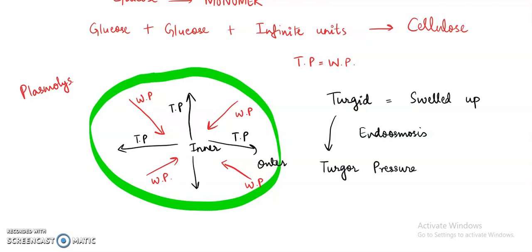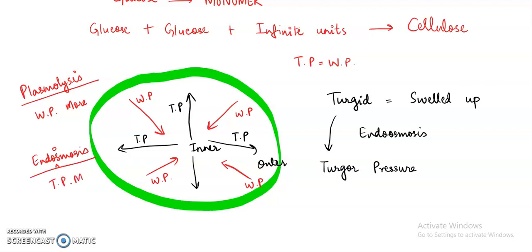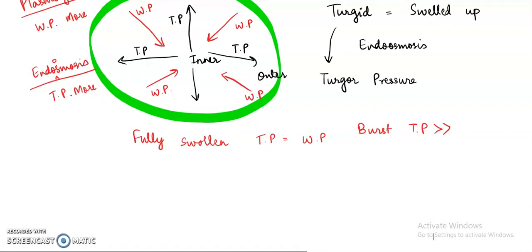When a cell is showing plasmolysis — when it is placed in a hypertonic solution — water comes out of the cell, and at that time wall pressure is more. When the cell is placed in a hypotonic solution and endosmosis occurs, turgor pressure is more. In a fully swollen cell, turgor pressure equals wall pressure. If the cell is about to burst, turgor pressure is very high. But generally plant cells don't burst because they have a cell wall, which gives rigidity.